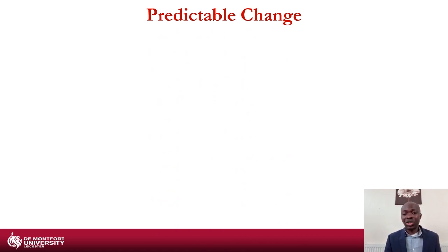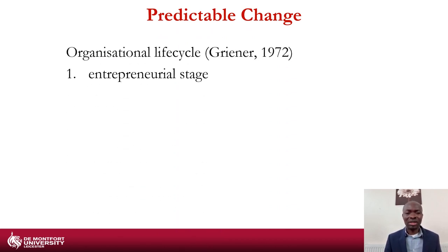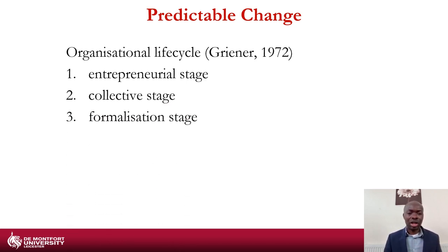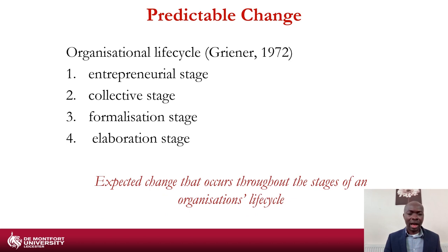Predictable change refers to the life cycle that organisations naturally progress through. The Greiner model is one way to look at this, where organisations start from the entrepreneurial stage, move to the collective stage, then to formalisation, and then to the elaboration stage. These are expected changes that are bound to happen within the organisational life cycle.